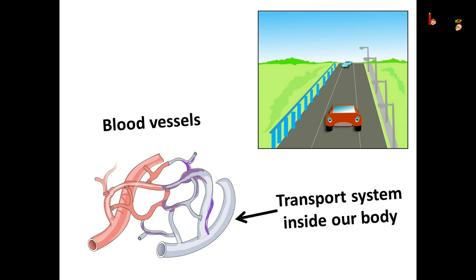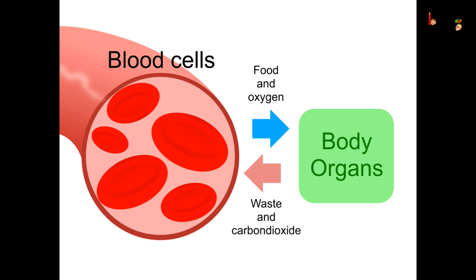Just like the garbage truck takes the garbage to the treatment or disposal plant. So we must have a great transport system to deliver the oxygen and food to all the cells, and also to collect the generated waste from there. It is the blood which transports substances like the digested food from the small intestine to the other parts of the body. It also carries oxygen from the lungs to the cells of the body. It also transports waste for removal from the body.